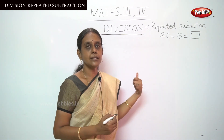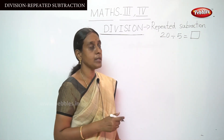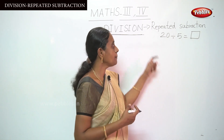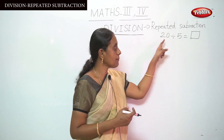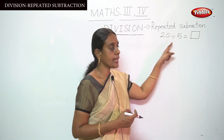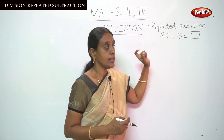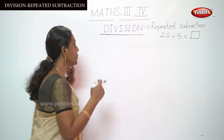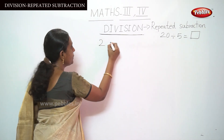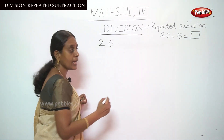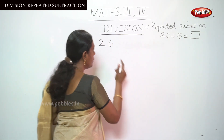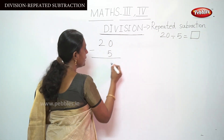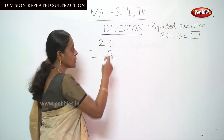20 divided by 5 — you should find out this quotient by doing this method. We have learnt by using multiplication tables in our previous pattern. Now we are going to do the repeated subtraction method. You put 20 here and write the divisor, then minus.